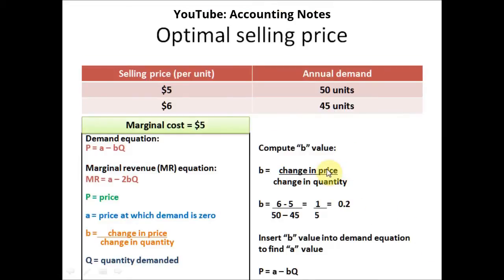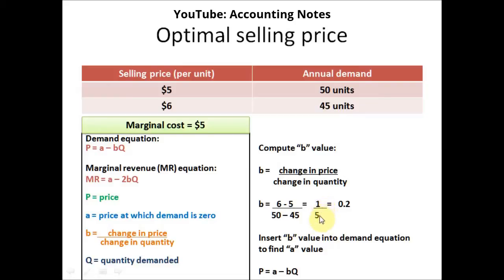So we have our exercise. The first step is to compute B, the B value for the demand equation. We know that B equals change in price divided by change in quantity. The change in price is 6 minus 5, which equals 1. The change in quantity is 5 units, because 50 minus 45 is 5. So 1 divided by 5 is 0.2 — B equals 0.2.